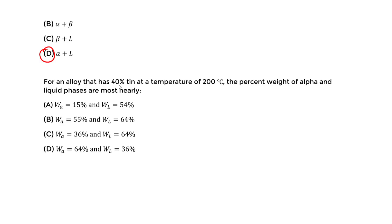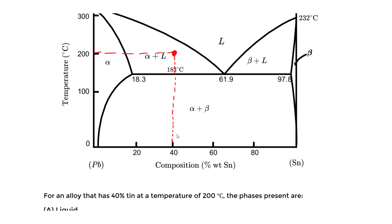Now for the same alloy — 40% tin at 200°C — we're asked what the percent weight of the alpha and liquid phases are. To solve this, we apply the lever rule. The handbook also discusses this under the lever rule section with a visual example.